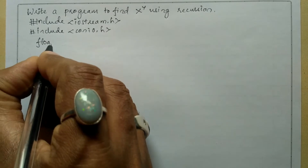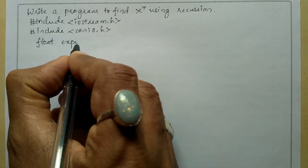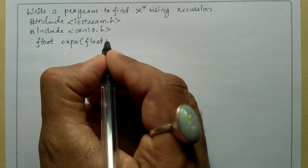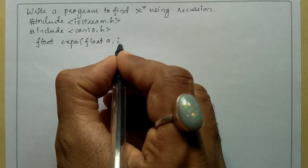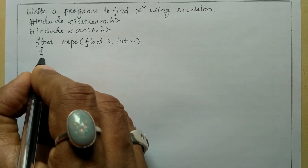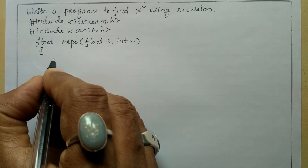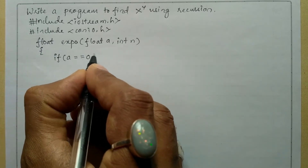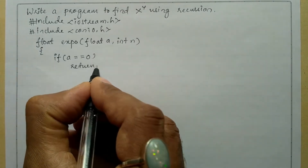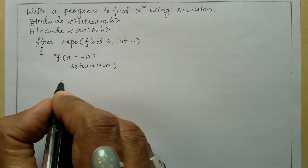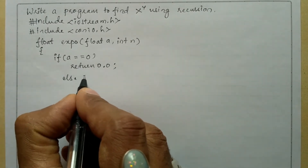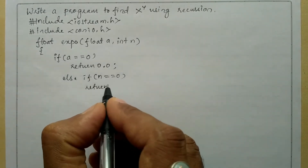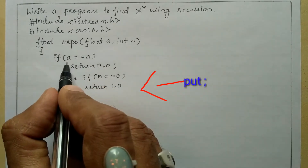Now let us define the function called expo with return type float. I'm going to write expo as the name of the function, with two arguments: float a and int n. The curly open brace indicates the beginning of the function body. I'm going to check the condition: if a is equal to zero, then it returns zero point zero.